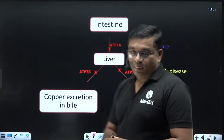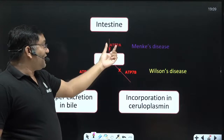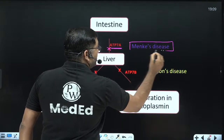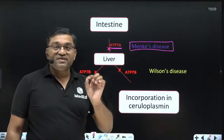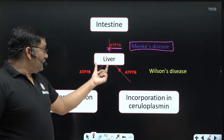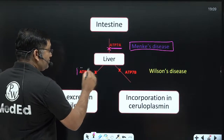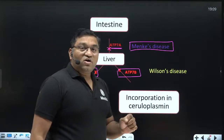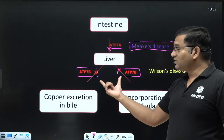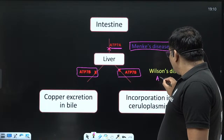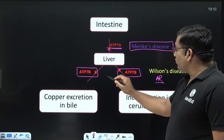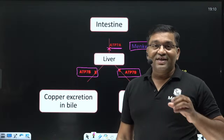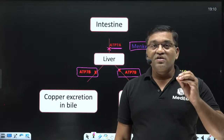From the intestine, absorption of copper occurs via ATP7A. Mutation in ATP7A causes Menkes disease, also known as Menkes Kinky Hair Syndrome. If ATP7B mutation is present, its two important functions are affected: excretion of copper into bile and incorporation of copper into ceruloplasmin. This is an autosomal recessive disorder with mutation in the ATP7B gene, leading to decreased production of this ABC transporter protein.